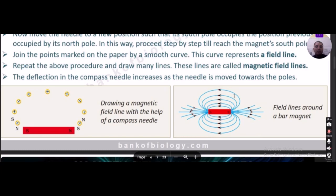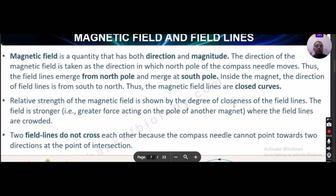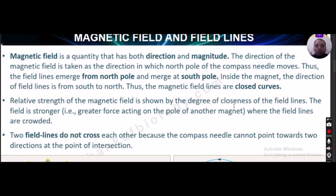Magnetic field is a quantity that has both direction and magnitude. The direction of the magnetic field is taken in the direction in which the north pole of the compass needle moves. Thus, field lines emerge from the north pole and merge at the south pole; inside the magnet, the direction of field lines is from south to north. Magnetic field lines are closed curves. The relative strength of the magnetic field is shown by the degree of closeness of the field lines.